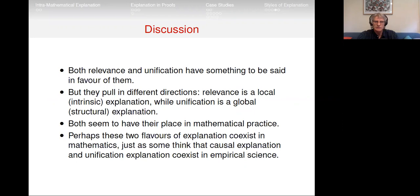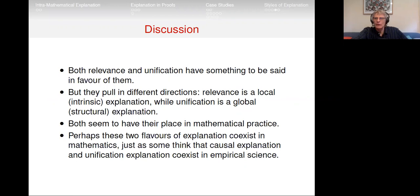To wrap things up: both relevance and unification have something to be said in their favor, but they pull in different directions — relevance is a local intrinsic explanation, unification is a global structural explanation. Both seem to have their place in mathematical practice. There may well be two quite different notions of explanation functioning in mathematics, just as causal explanation and unification explanation co-exist in empirical science. Maybe that's just the same sort of thing we're seeing in philosophy of science. We kind of hold out hope for one unified account of explanation, but I'm starting to lose a little of that hope. Thanks very much.